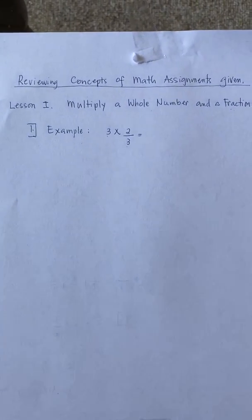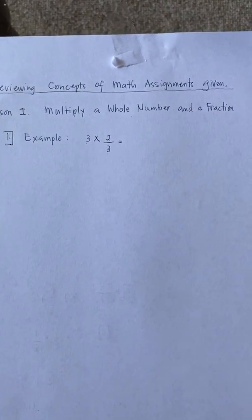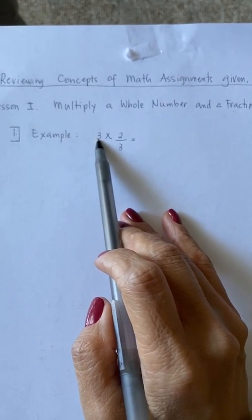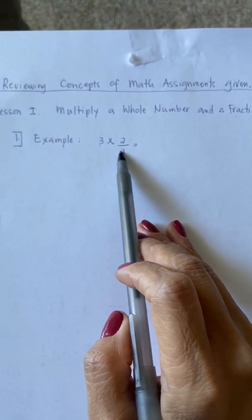For lesson number 1, we are to multiply a whole number and a fraction. For our first example, we are given 3 times 2 thirds.